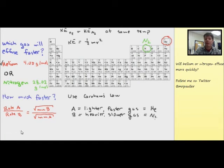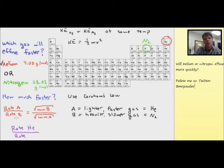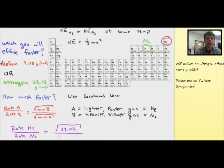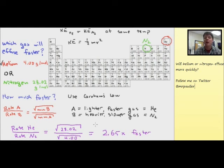All I need to do now is set up my equation and plug in the values for the molar masses. The rate of A — that's helium — divided by the rate of B — that's nitrogen — equals the square root of the molar masses. Remember, you've got to flip them. So we take the square root of 28.02 divided by the square root of 4.00. The units cancel, and this works out to give us a value of 2.65. This means that helium is going to effuse 2.65 times faster than nitrogen.